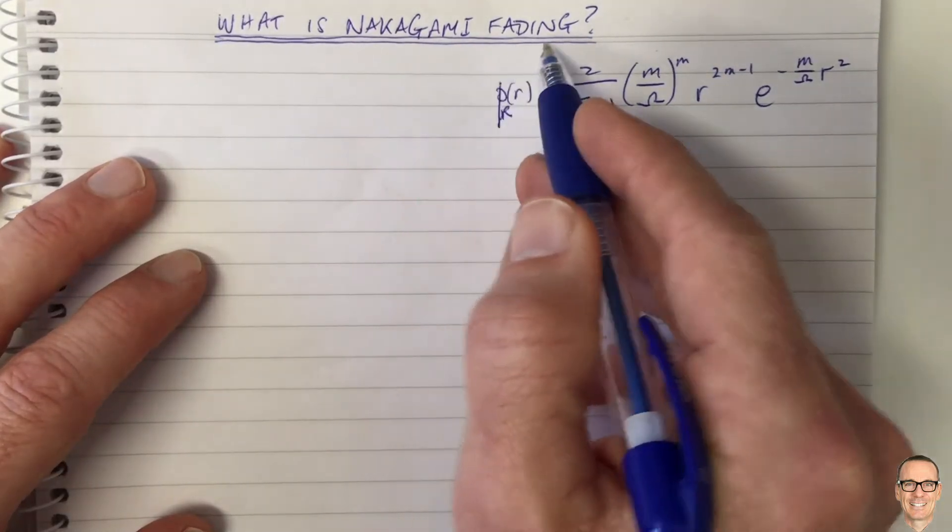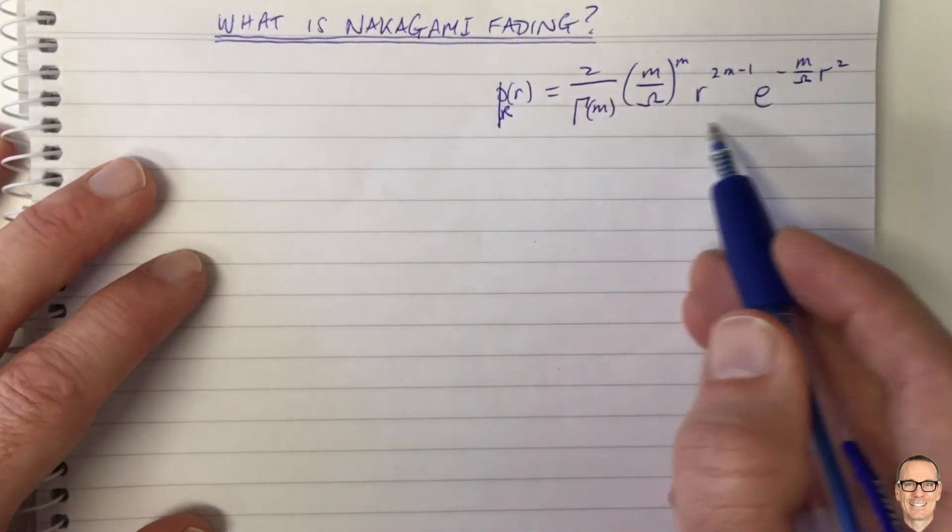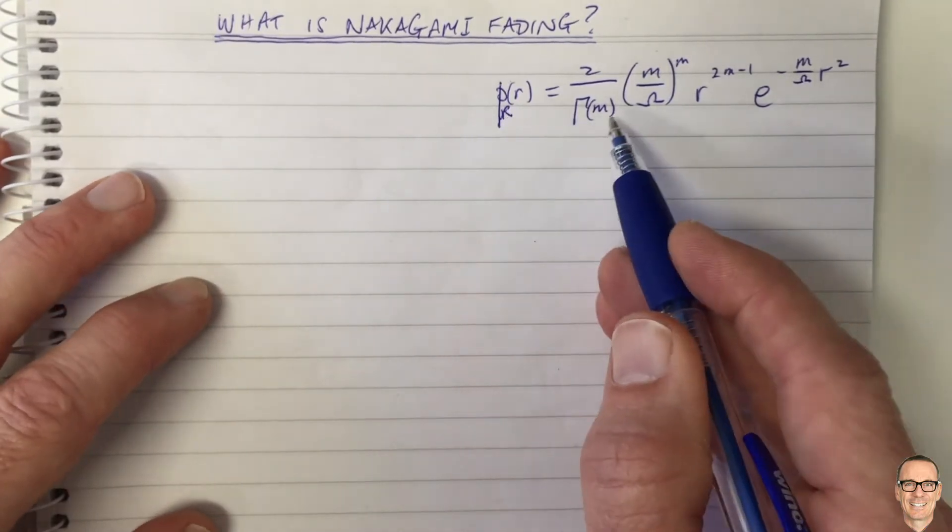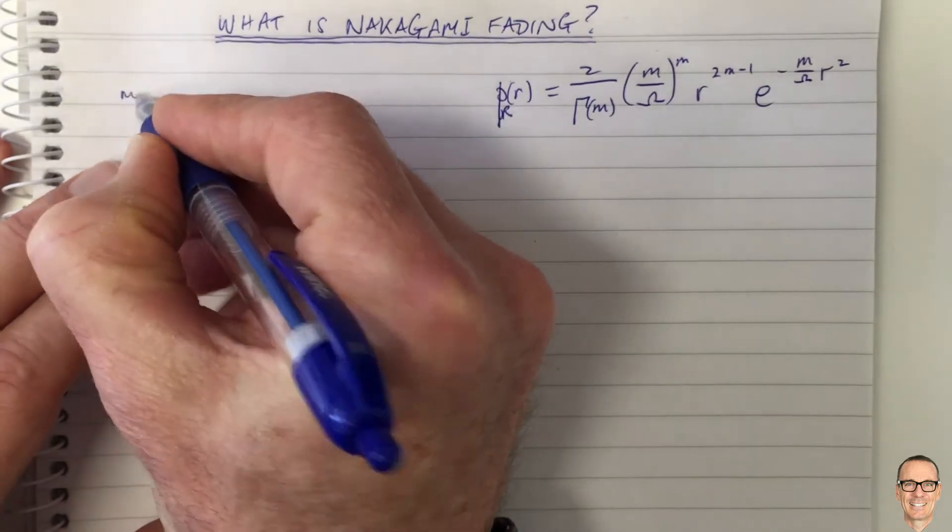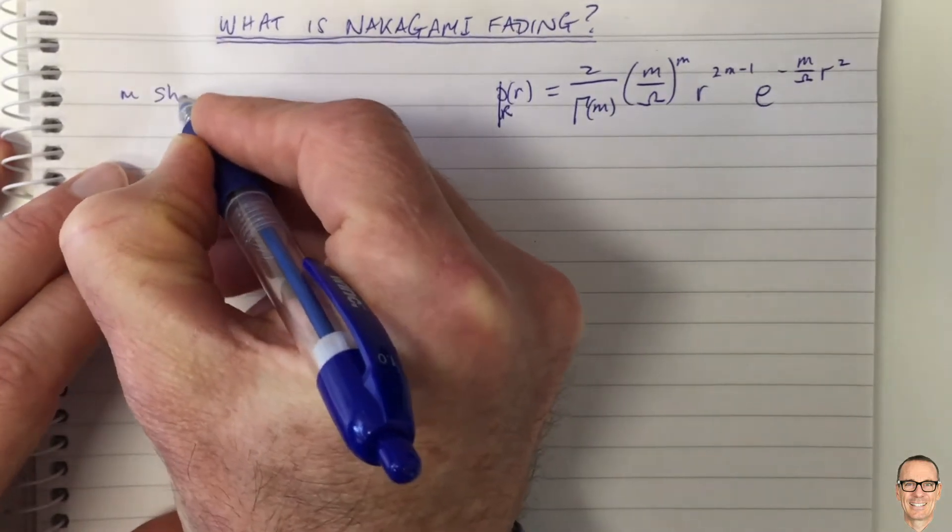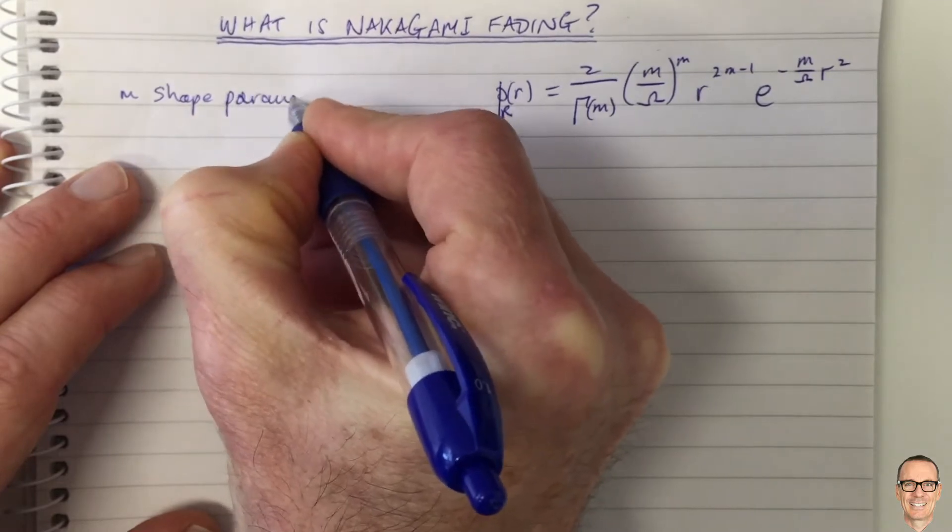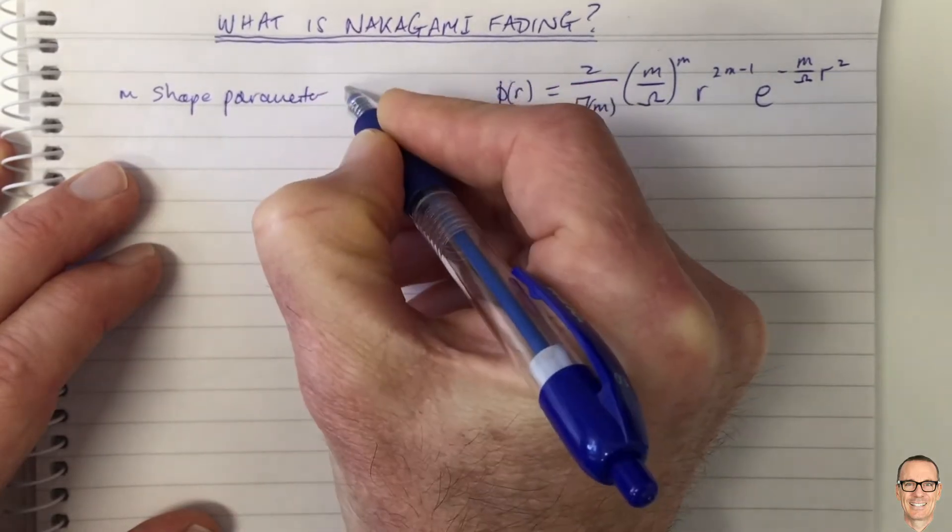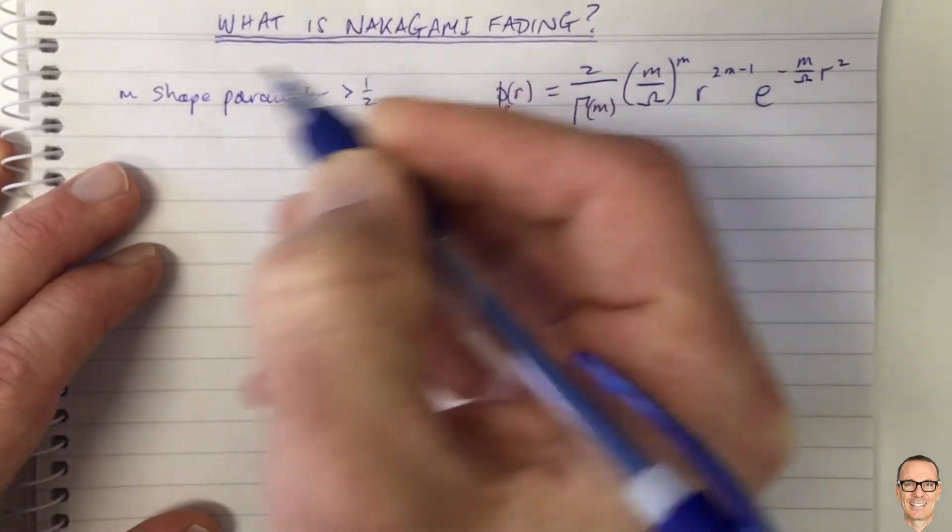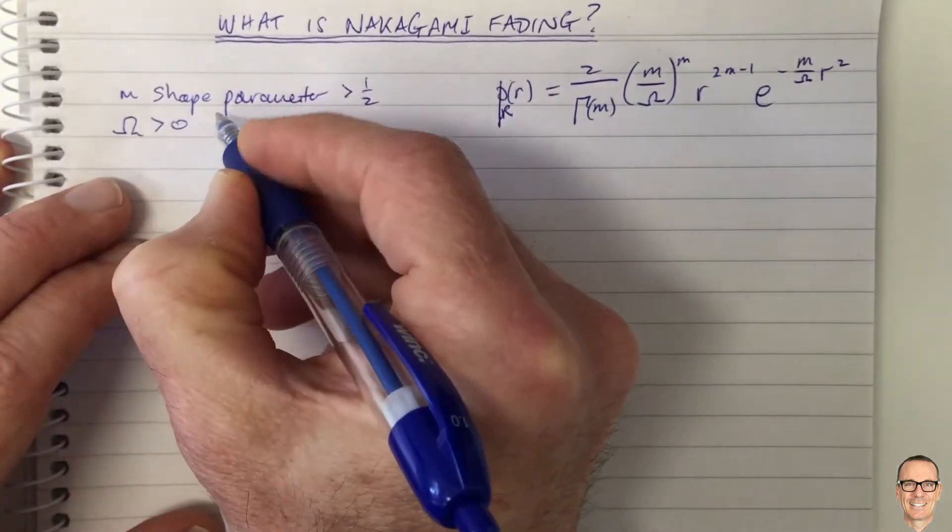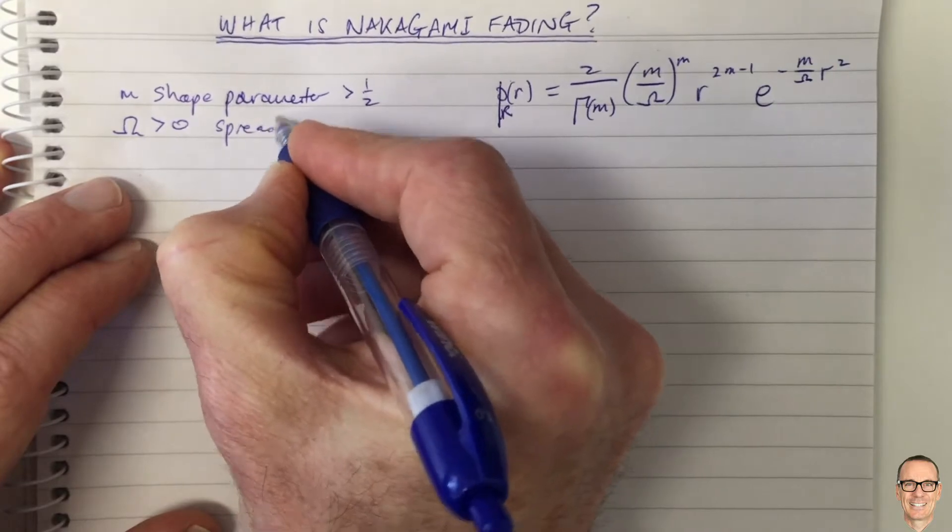So what is Nakagami fading? Well, here's the formula for the probability density function and it has two parameters: M, which is commonly called the shape parameter and is bigger than a half, and omega, which is bigger than zero, which is the spread parameter.